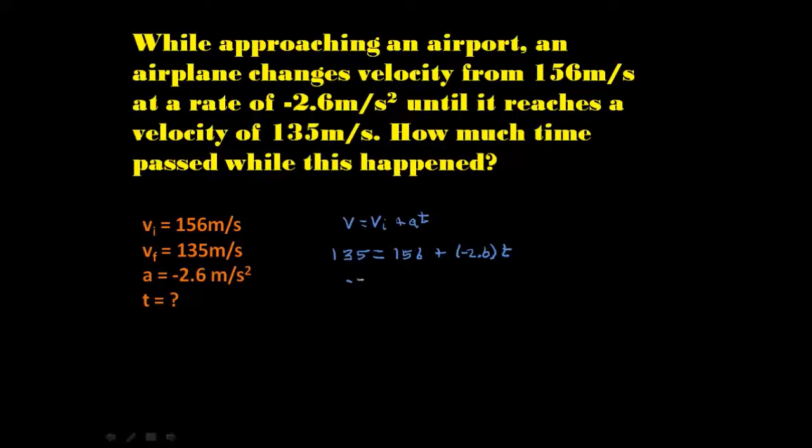Do you get that negative 21 equals negative 2.6 t? And then, if you continue solving, do you get that that time t is positive 8.0769 and so on seconds. Of course, we need to round that. Two significant figures on either side. So, we round that to 8.1 seconds. Not negative 8.1 seconds. 8.1 seconds. Put the unit on there. That matters. It's not 8.1 hours. It's not 8.1 years.